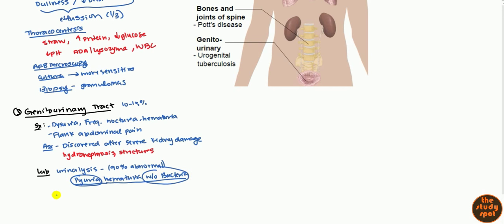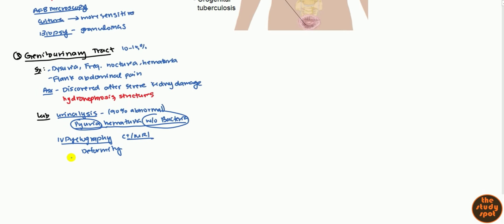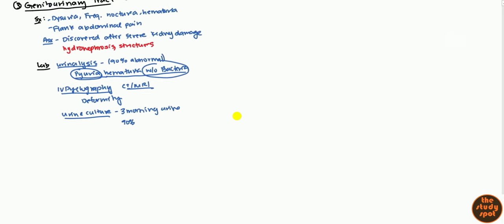You may also want to do an IV pyelography, urinalysis, IV pyelography, CT and MRI to see if there's any deformities found within the urinary tract which can be caused by TB. Finally, you do want to do a urine culture to see if you can find something. You want to get three morning urine samples and generally about 90% of the time you should be able to get something there.